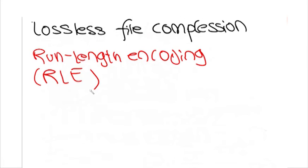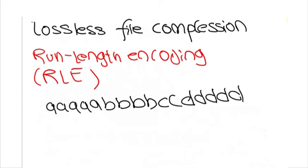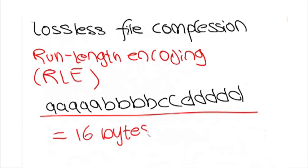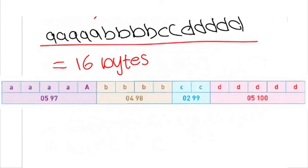Using RLE on text data. Consider the following text string. Assuming each character requires one byte, then this string needs 16 bytes. If we assume ASCII code is being used, then this string can be coded as follows. This means we have five characters with ASCII code 97, four characters with ASCII code 98, few characters with ASCII code 99, and five characters with ASCII code 100. Assuming each number in the second row requires one byte of memory, the RLE code will need eight bytes. This is half the original file size.